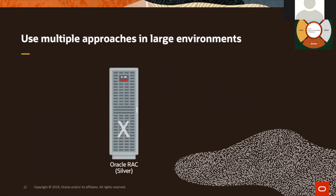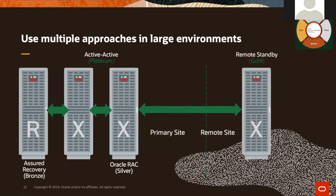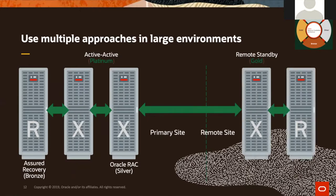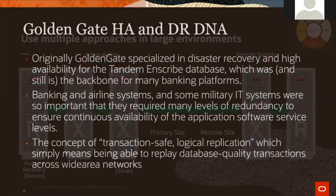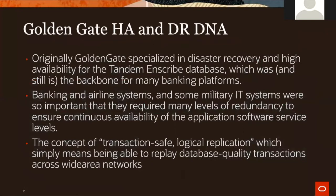In large environments, you can mix approaches. For example, your primary data center might use active-active with platinum support, while the remote DR site uses gold support with a logical standby database. Golden Gate's HA capability is in our DNA — it was specifically designed for Tandem databases used in financial systems. The logical replication allows data stores to be far enough apart to operate on different power grids, so if one fails, the replicated database on the other continues processing.